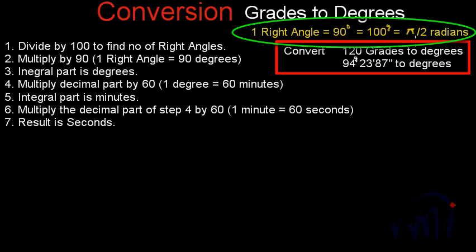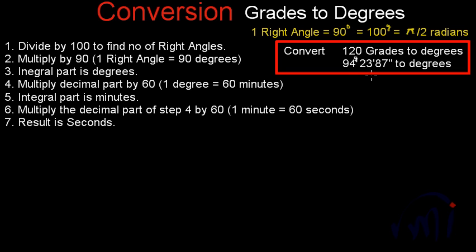This relation lies at the basics of these kinds of conversions. We have to solve two problems: first, convert 120 grades into degrees, and then convert 94 grades, 23 minutes and 87 seconds to degrees.